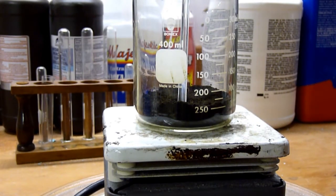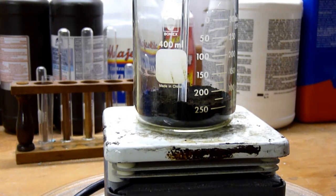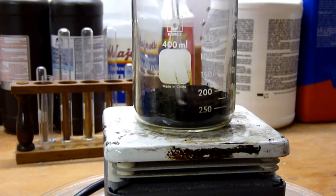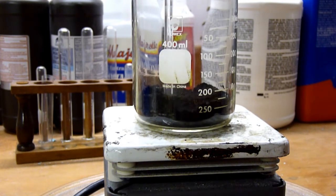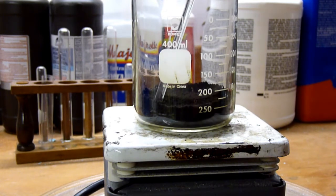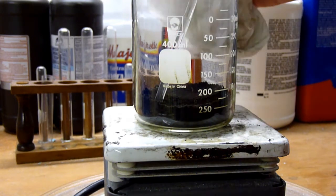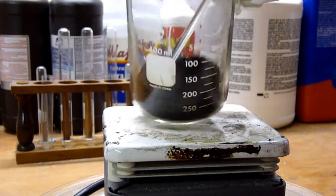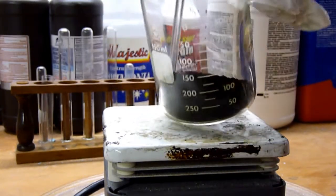After probably about a half an hour of heating we have now converted just about all of our copper carbonate into copper oxide. So you can see it's a very black brown powder. And of course this beaker is very hot so we need something to grab onto it with. And as you can see it's a brownish powder.